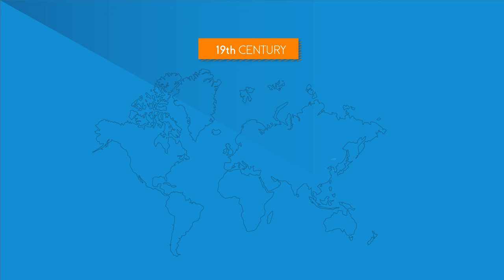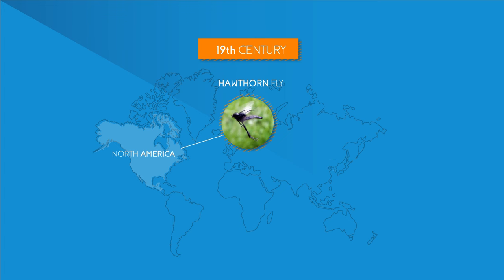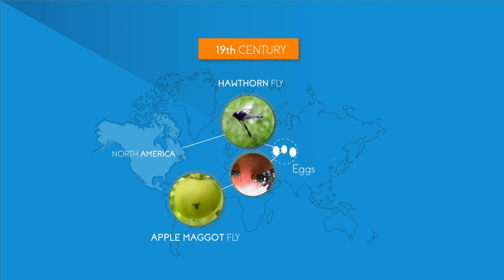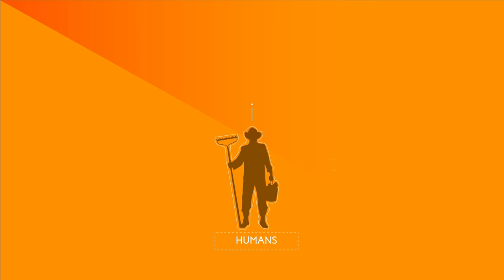An example of a speciation event happened in North America in the 19th century. At that time, hawthorn flies traditionally laid their eggs on hawthorn fruit, which were then eaten by the newly hatched maggots. Some time after the introduction of non-native apple trees, a new hawthorn fly was recorded which laid its eggs on apples. Over time, this new hawthorn fly stopped laying eggs on hawthorn in favor of apples. This new fly is now called the apple maggot fly.